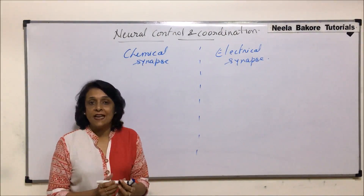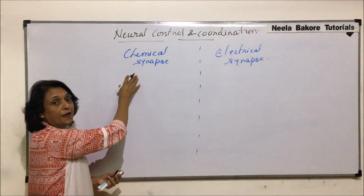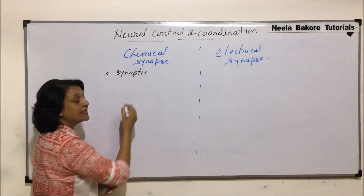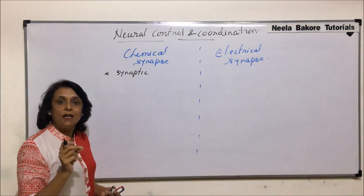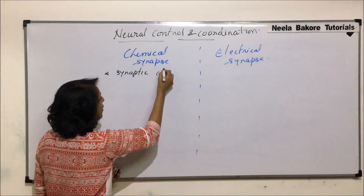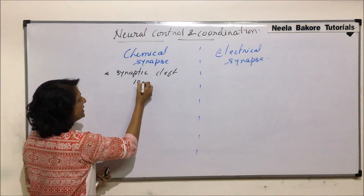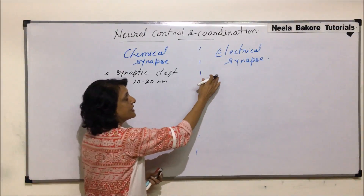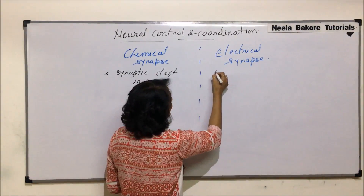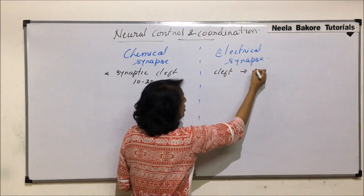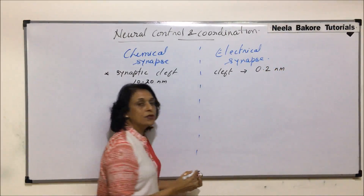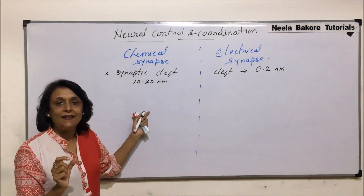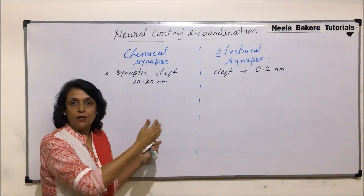In the case of chemical synapse, the synaptic cleft — that is the gap between the axon and the dendrite of the other neuron — is normally 10 to 20 nanometers, meaning the gap is wider. Whereas in the case of electrical synapse, this cleft is about 0.2 nanometers; it is much, much smaller.